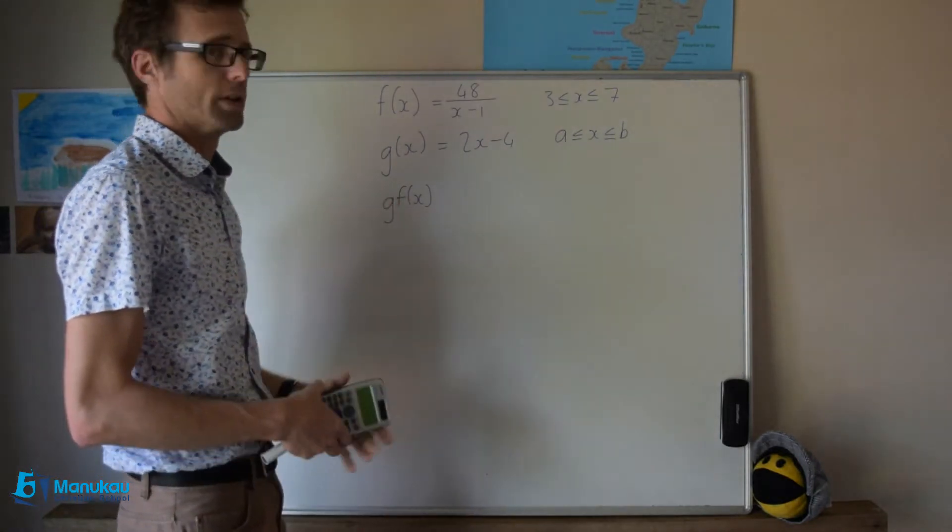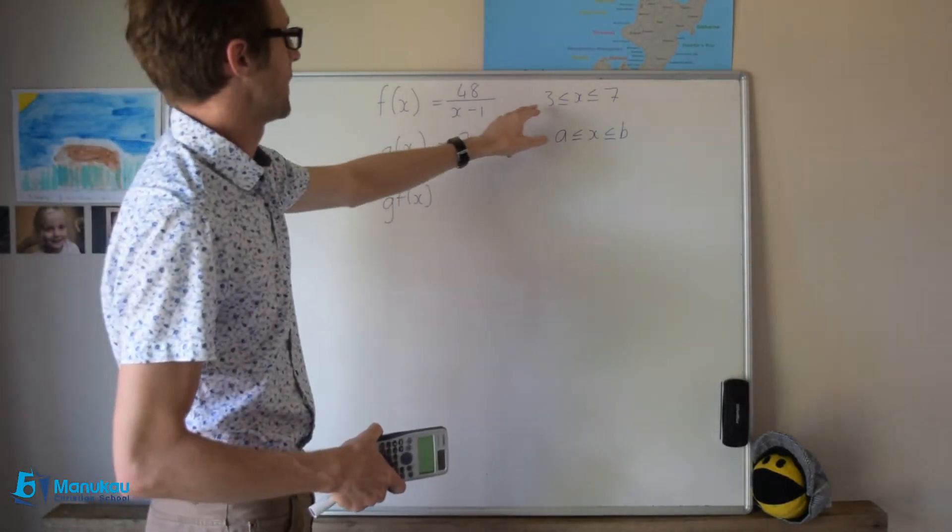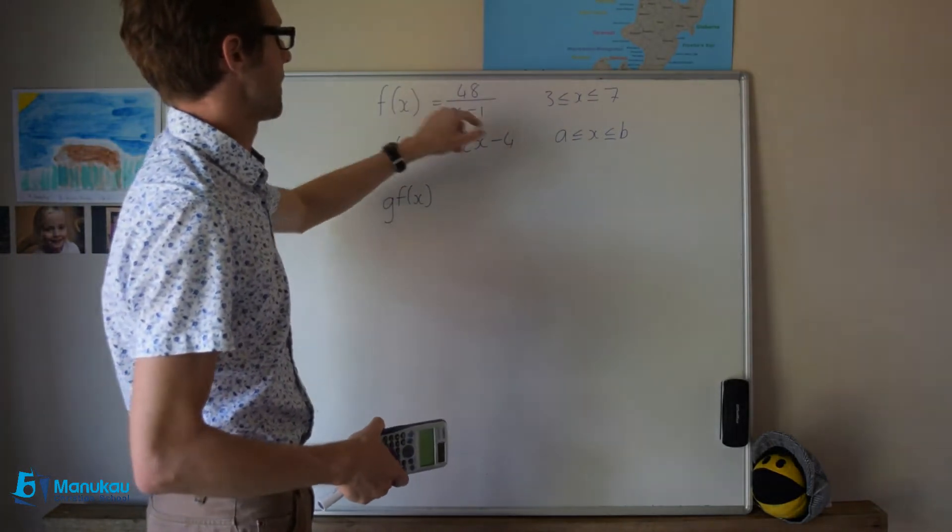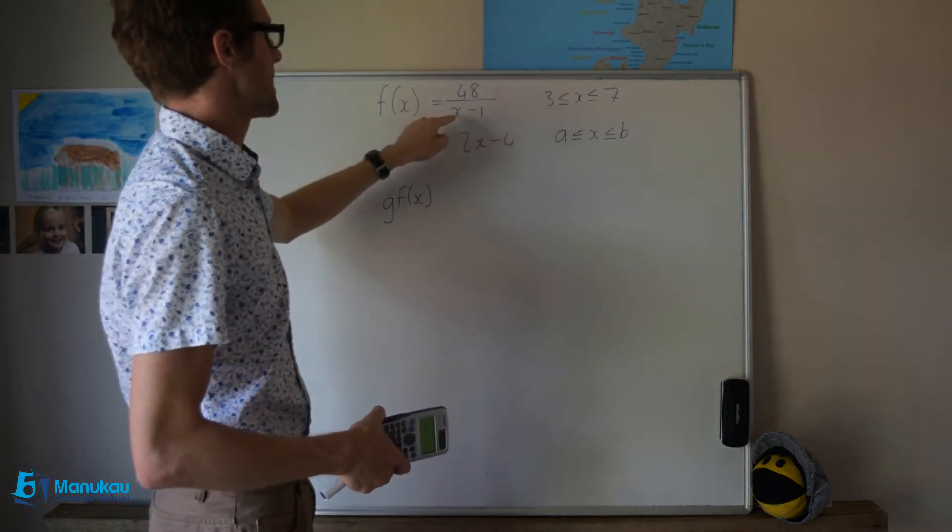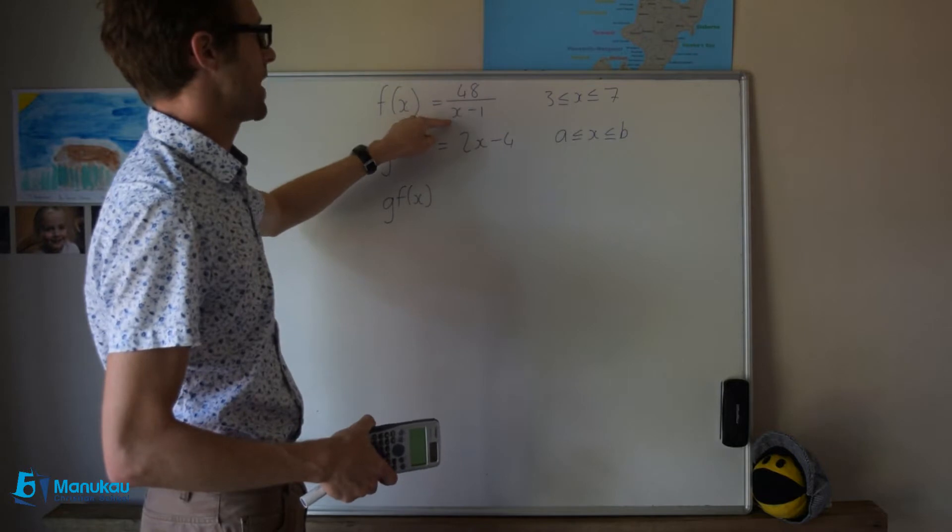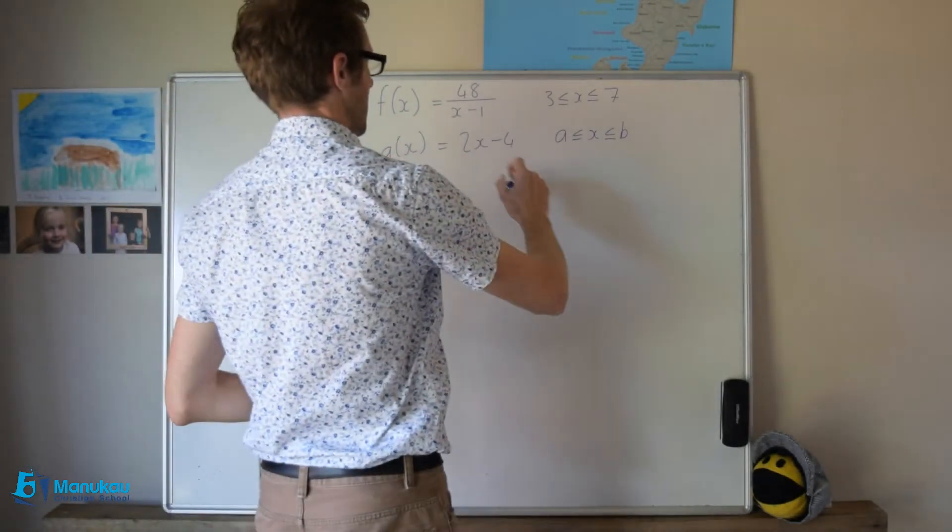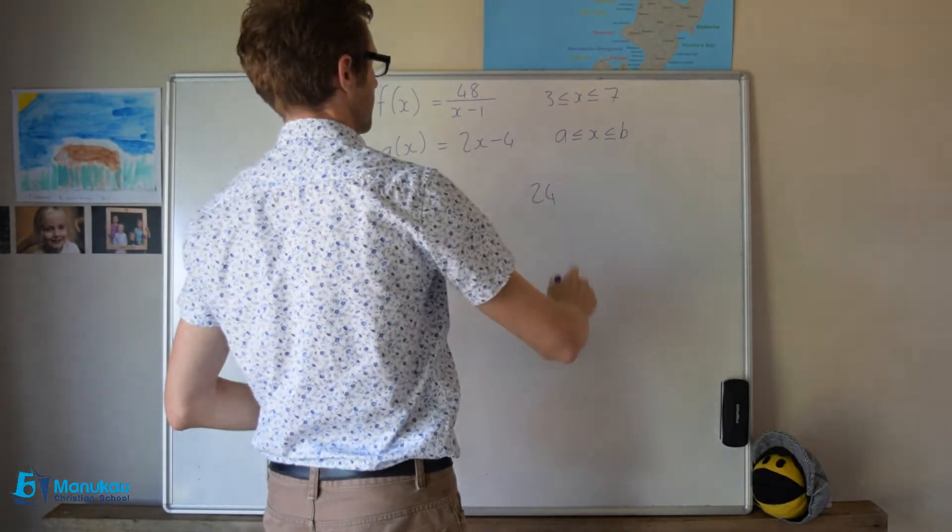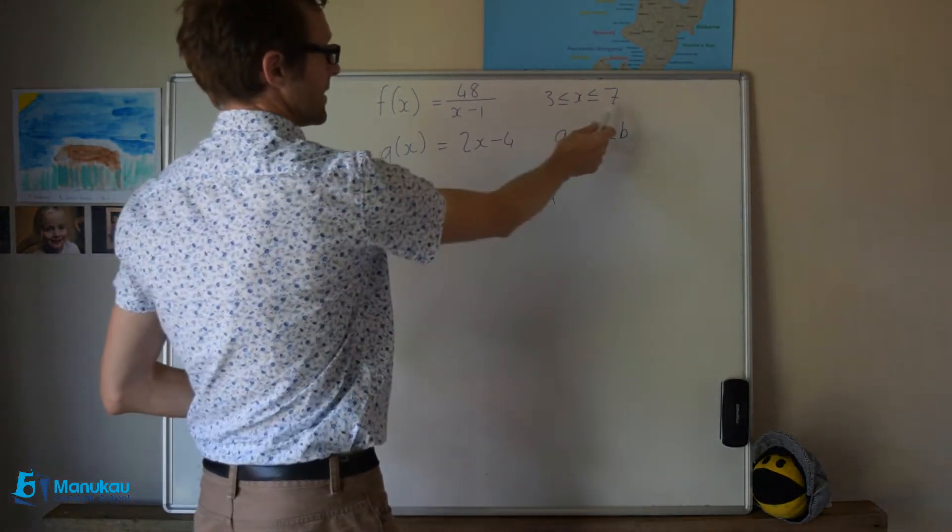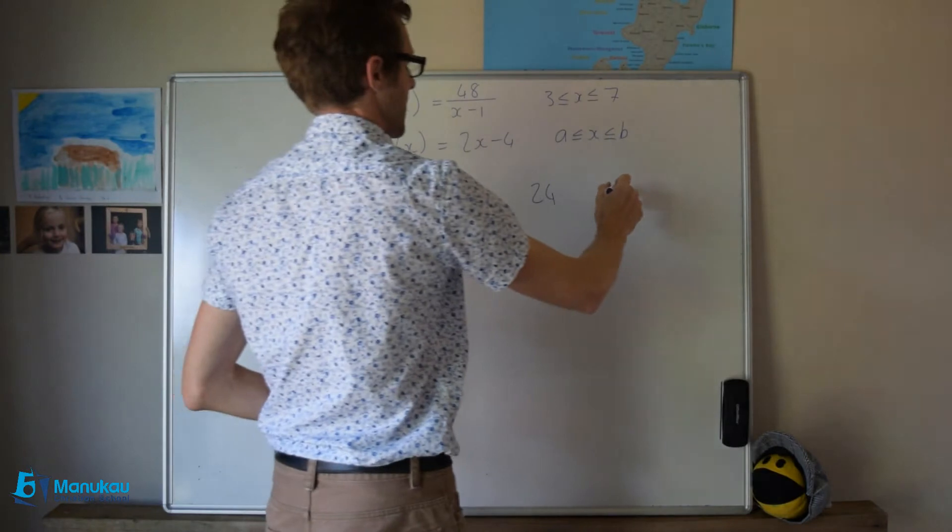What you want to do in this circumstance is toss in these values into f. If we chuck in a 3 here, we'll have 48 divided by 2, and that will give us 24. And if we chuck in a 7 here, 48 divided by 6, which is 8.